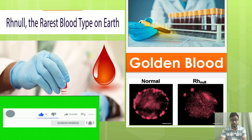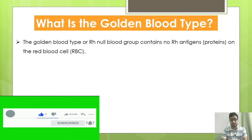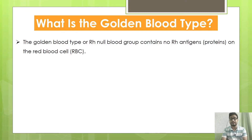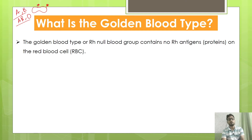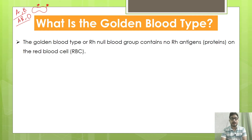So let's jump into the topic. What is golden blood? The golden blood type, or Rh null blood, is a blood group that contains no Rh antigens in the red blood cells. Basically, all blood groups — A, B, AB, and O — have particular antigens present on their RBC surface. But in the case of golden blood or Rh null blood, there is a total absence of all Rh antigens on the RBC surfaces.